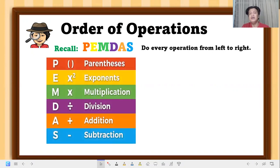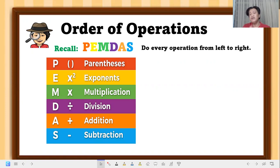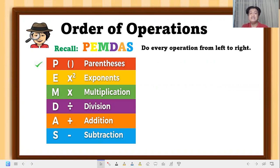PEMDAS stands for: P — Parenthesis, E — Exponents, M — Multiplication, D — Division, A — Addition, and S — Subtraction. When we have a series of operations, we have to follow the order: parenthesis, exponents, multiply, divide, addition, subtraction. Note that addition and subtraction have the same priority, as do multiplication and division.